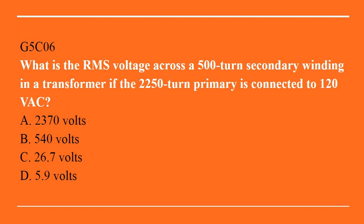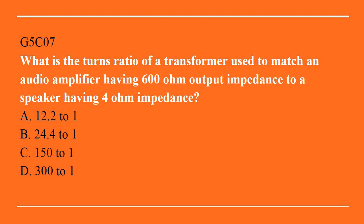G5C06: what is the RMS voltage across a 500 turn secondary winding in a transformer if the 2250 turn primary is connected to 120 volts AC? A. 2370 volts. B. 540 volts. C. 26.7 volts. Or D. 5.9 volts. Correct answer is C: 26.7 volts. G5C07: what is the turns ratio of a transformer used to match an audio amplifier having 600 ohm output impedance to a speaker having 4 ohm impedance? A. 12.2 to 1. B. 24.4 to 1. C. 150 to 1. Or D. 300 to 1. Correct answer is A: 12.2 to 1.